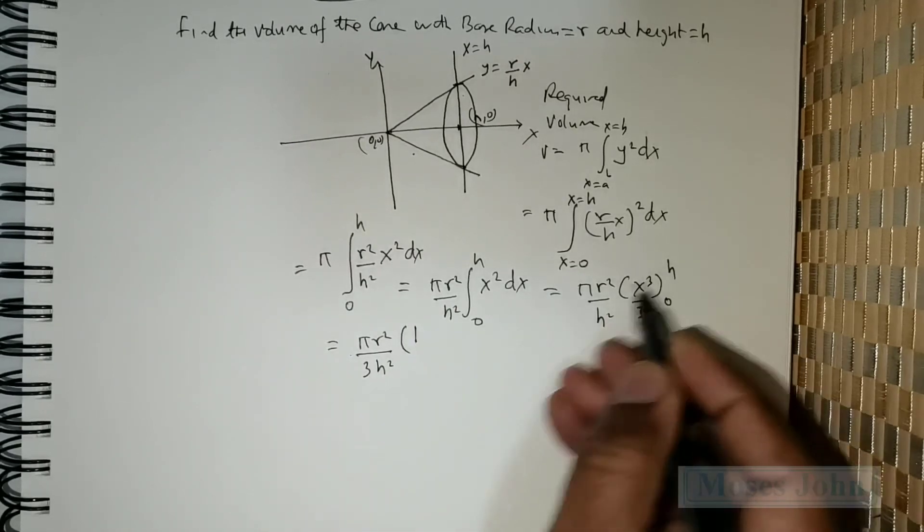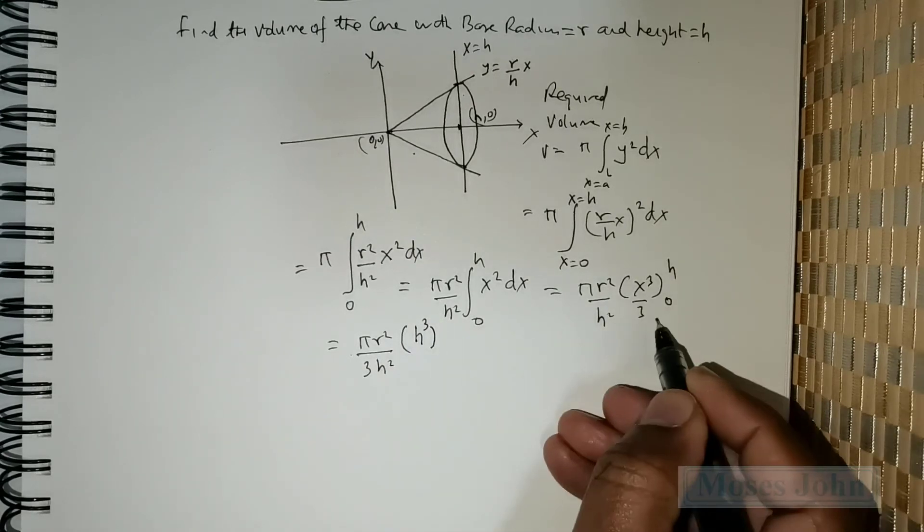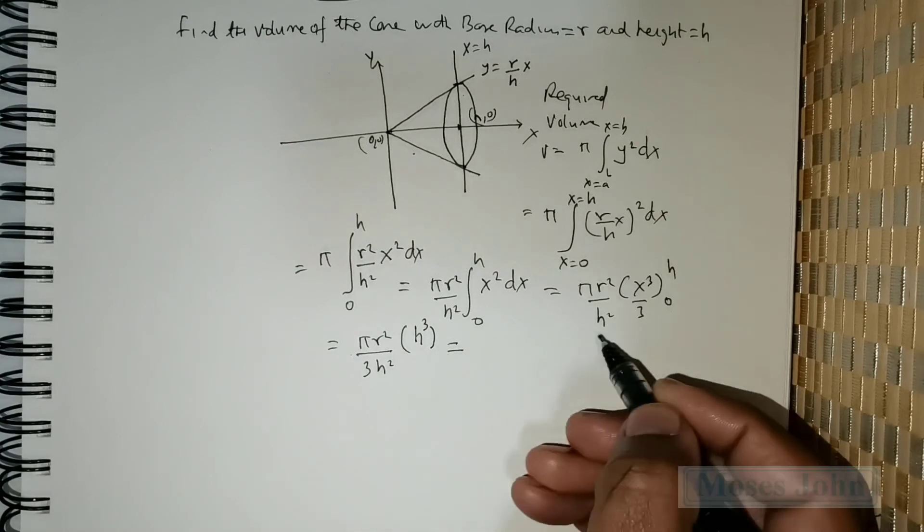I apply the limits. I get pi times r squared divided by 3 times h squared. The limits is going to be applied. So that's h. So that will give me h cubed. No need to apply the lower limit. It's naturally 0.